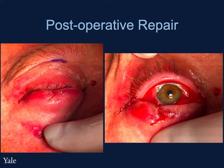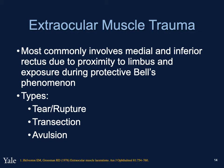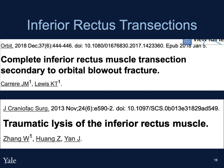Extraocular muscle trauma most commonly involves the medial and inferior rectus muscle due to their proximity to the limbus, being 5.5 and 6.5 mm respectively, and their exposure during the protective Bell's phenomenon. Types of extraocular muscle trauma include tear or rupture, transection, or avulsion. Most inferior rectus muscle trauma is in association with orbital floor fracture. In a review of the literature, we found only one case of inferior rectus lysis without an associated orbital floor fracture, hypothesized to be due to muscle ischemia from contusion of the muscle during the trauma.